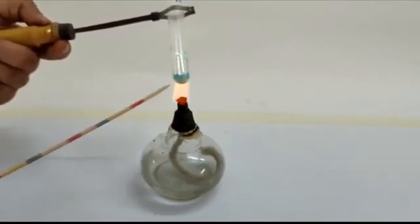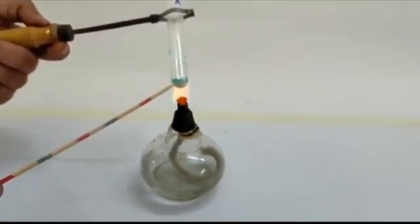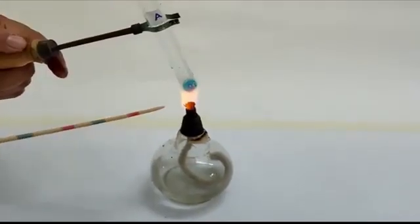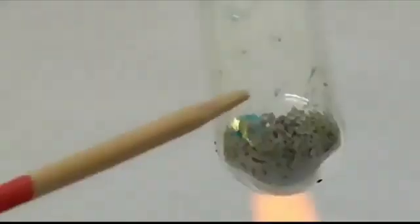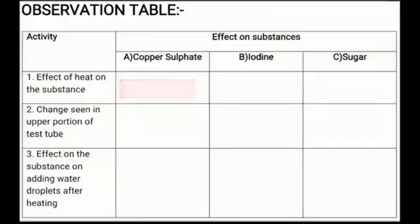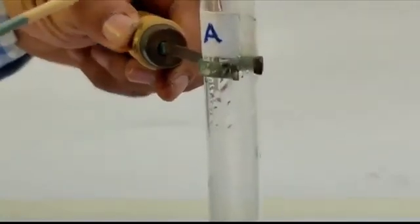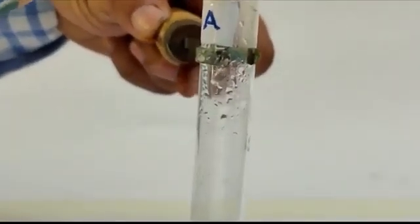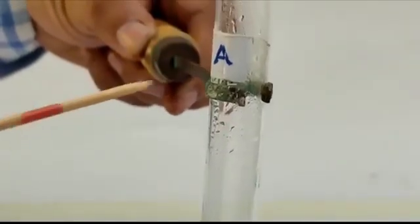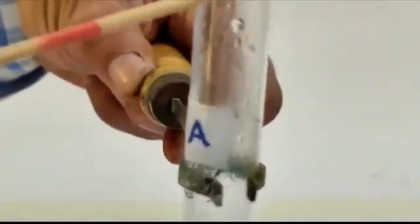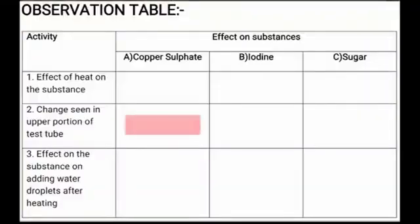Let's heat Copper Sulphate in Test Tube A. Observe the effect of heat and note down your observation. Write your observation in the given table. Now, observe the upper part of the test tube and note your observation in the table.